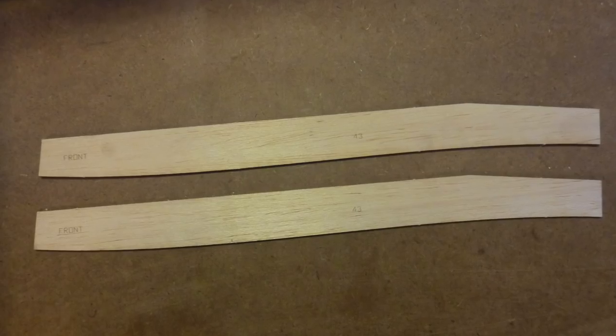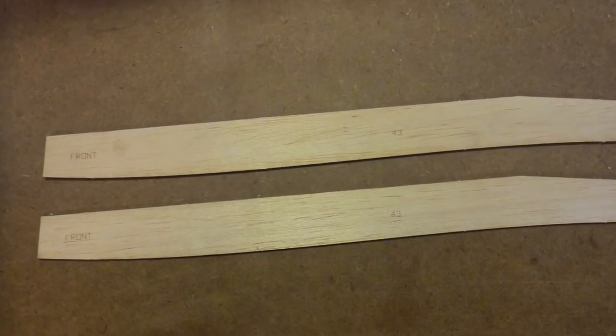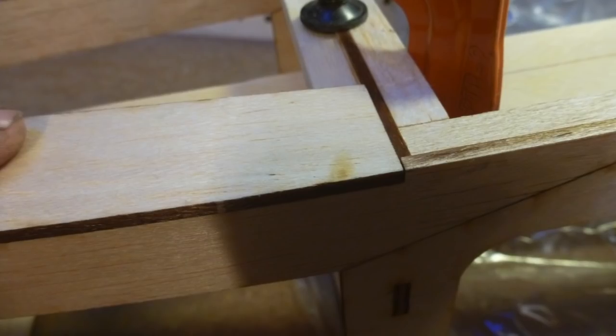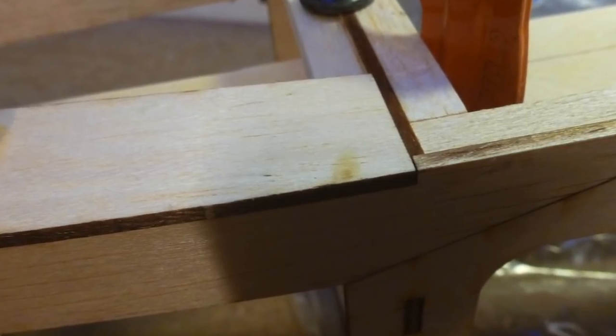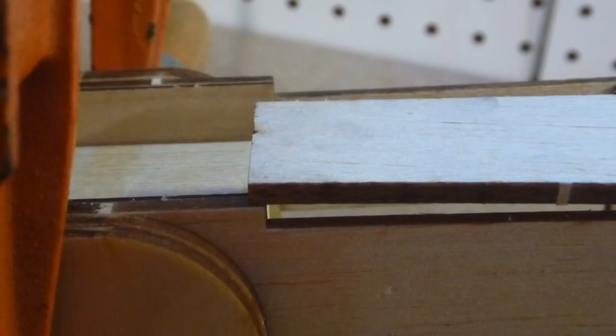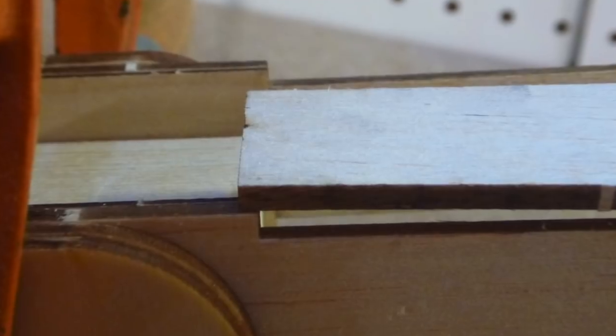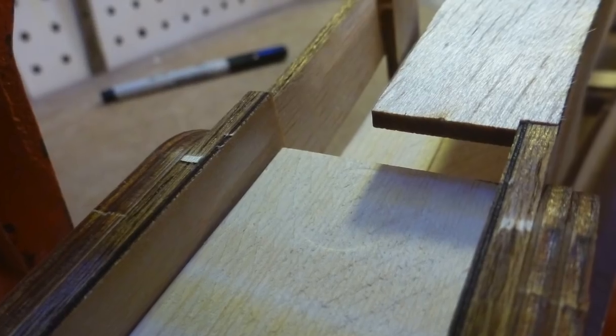Locate parts number 43, paying attention to the ends marked front. Dry fit them first, by putting the front end up to the bulkhead and marking a relief in the rear outer corner of each of them, before gluing them into place. Their inner edges may need trim slightly to fit together nicely.